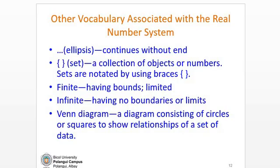Other vocabulary associated with real number systems are the ellipses, which continues without end; the curly braces or the set, which is a collection of objects or numbers; when we say finite, it is having bounds or limited, while infinite, it is having no boundaries or limits.